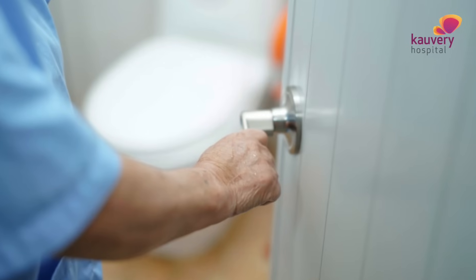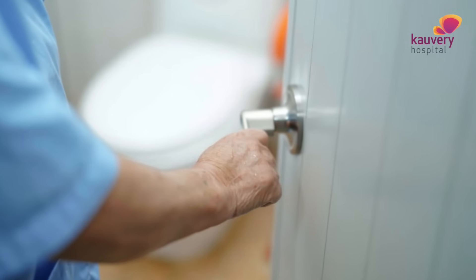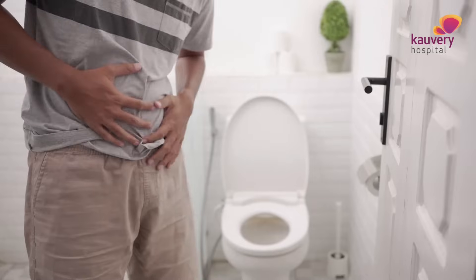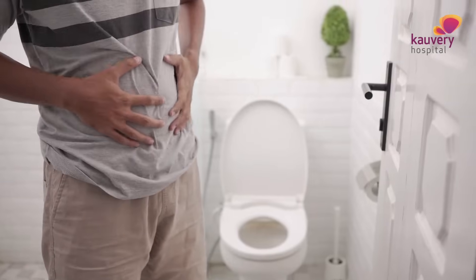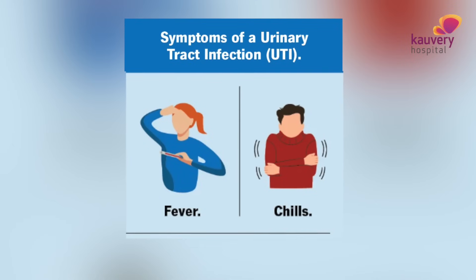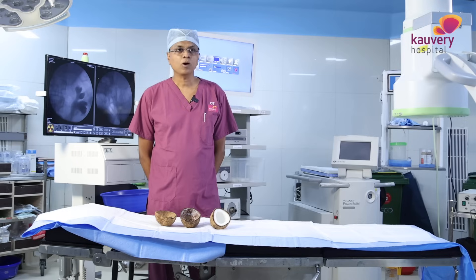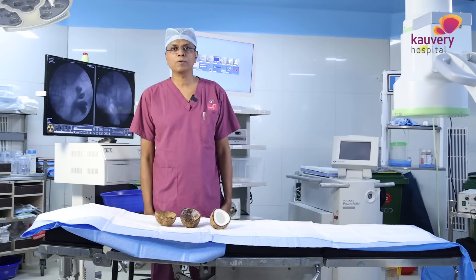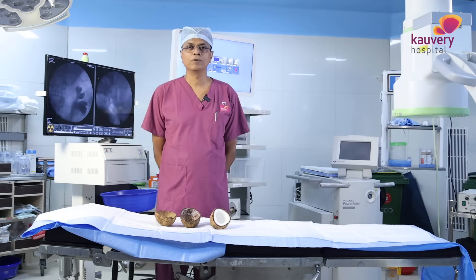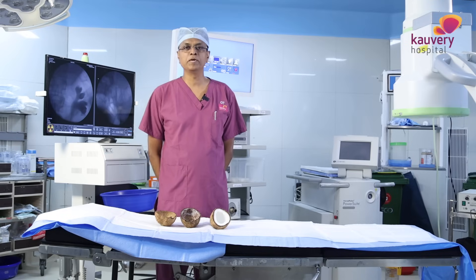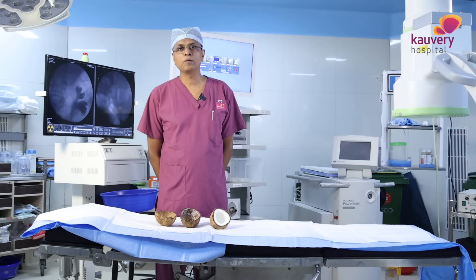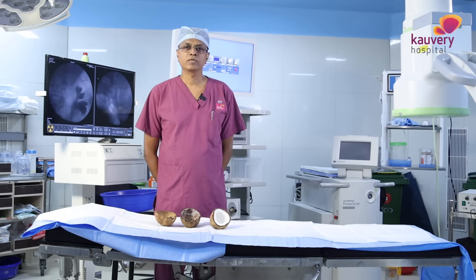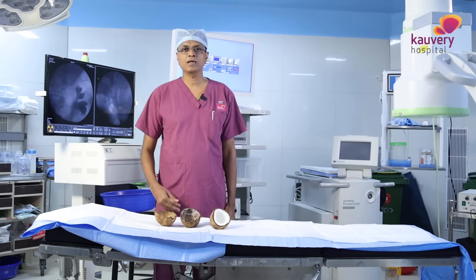Patients come at night and say they need to urinate frequently. They are afraid to go to public places because they can't control their urine. They will be hesitant to meet people. They feel the urge to urinate urgently. These are the earlier symptoms of prostate enlargement.